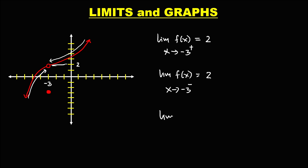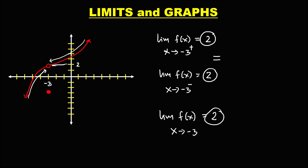To find the limit of f(x) as x approaches negative 3: since the right side limit is equal to the left side limit, therefore this limit is also equal to positive 2. To find the value of f(−3): since this is the shaded circle, therefore f(−3) is equal to negative 3.